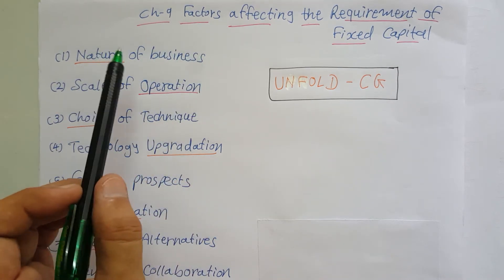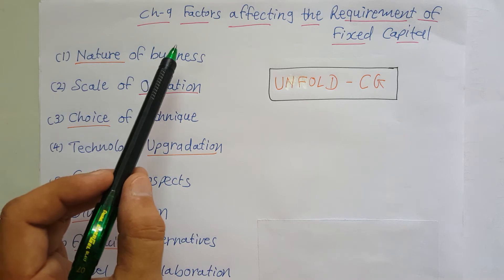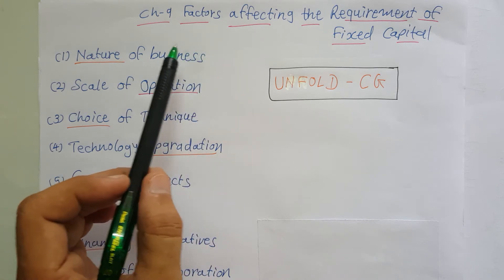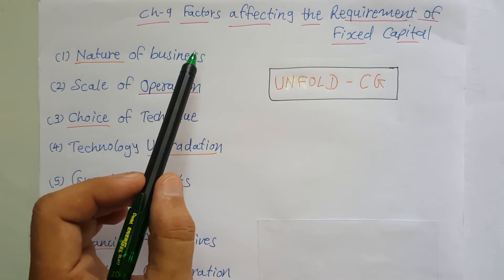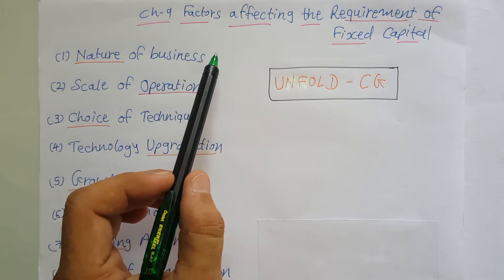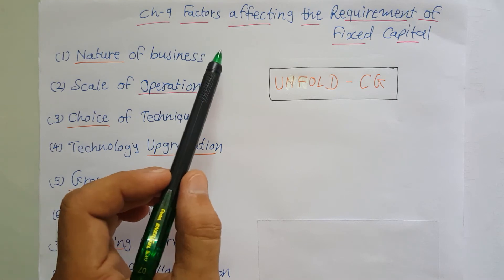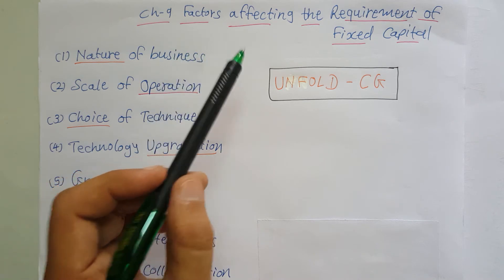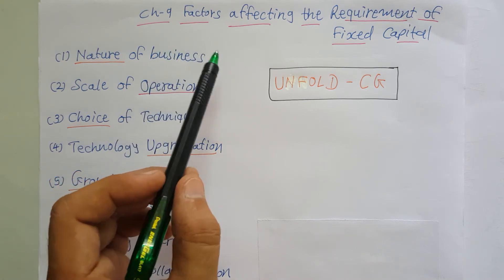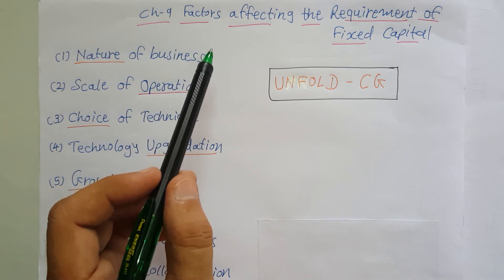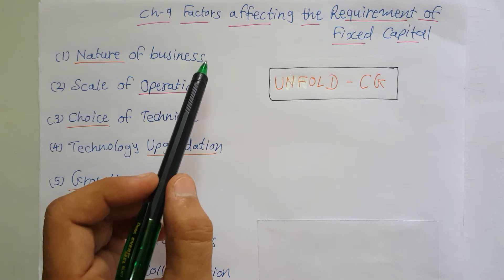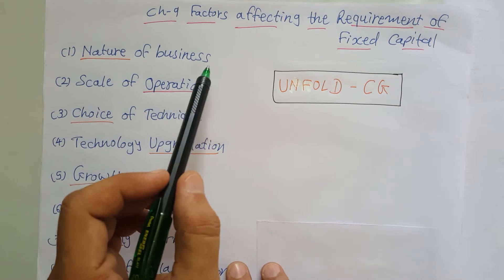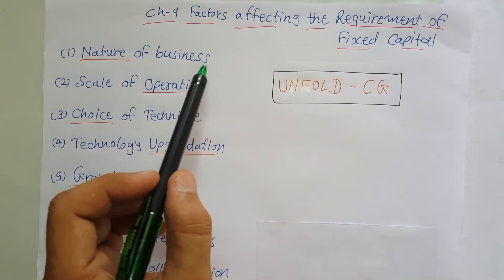First is the nature of business. The type of business has a very much effect on its capital requirements. For example, if your concern is with trading, at that time you need to invest a low amount in fixed assets as compared to a manufacturing business. In manufacturing you have to invest more in fixed capital, while in trading you invest less, because they do not have to purchase plant and machinery, land and building, or other things required for manufacturing.